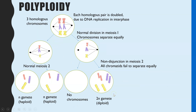Just to show, non-disjunction can also occur in meiosis II. In this case, division is normal in meiosis I and all chromosomes separate equally. However, in meiosis II, for one of the cells the chromatids do not separate equally — they're all pulled to one pole. As a result, we again get a diploid gamete and one gamete with no chromosomes.